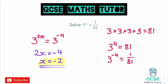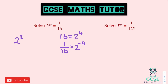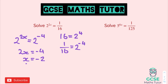There are two questions similar to the ones we just looked at — pause and have a go. For the first one: 16 is 2 to the power of 4, so 1 over 16 equals 2 to the power of minus 4. Now we've got them both as 2 to the power of something. Setting the powers equal: 2x equals negative 4, divide by 2, and x equals negative 2.